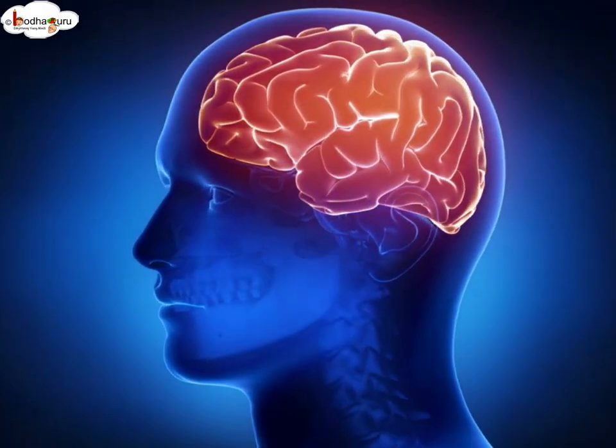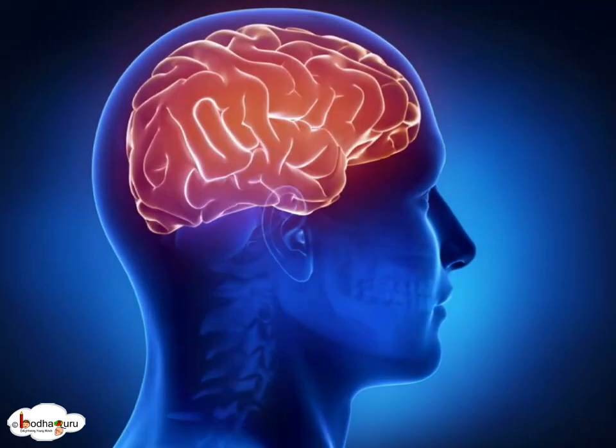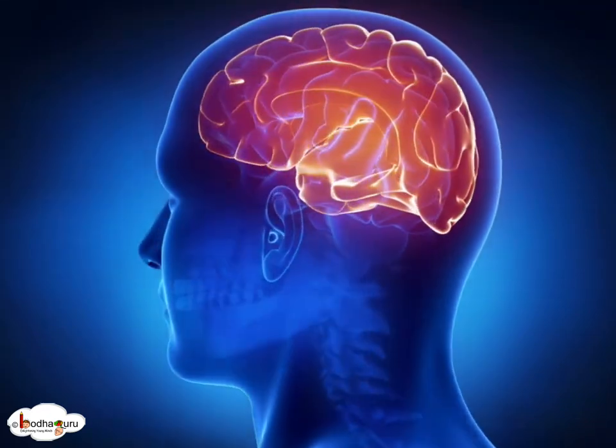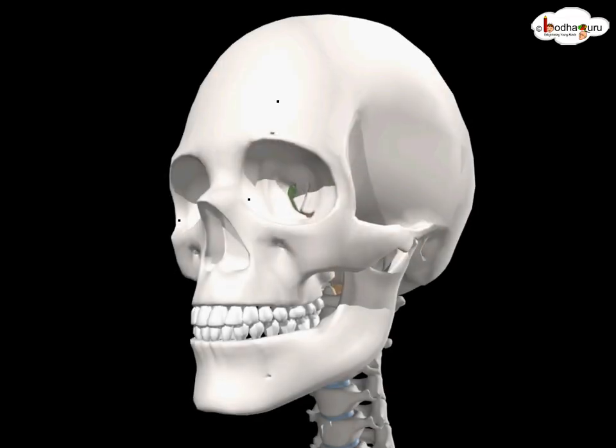But brain uses around 20% of the power that our body uses because it is like a super computer. This important organ is protected by the skull.